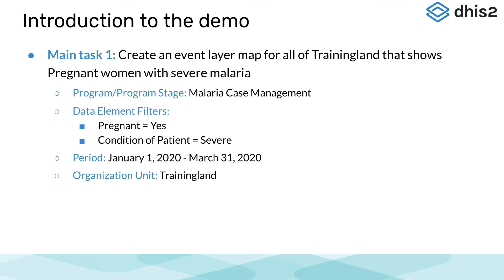Let's highlight the three main tasks we will cover in these demonstrations. The first task is to create a map showing cases of severe malaria in pregnant women. We will use the data element filters of pregnant equals yes, condition of patient equals severe, a period of January 1st 2020 to March 31st 2020, and an organization unit of Training Land.